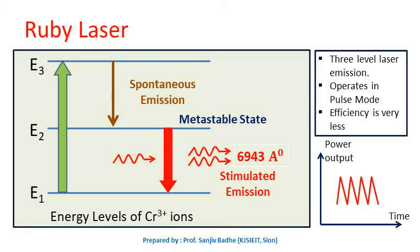The efficiency of the ruby laser is very low. Only a part of the light energy is utilized for exciting the chromium ions from E1 to E3; the rest remains unused and results in unnecessary heat, so frequent cooling is required. The power output is not continuous — it is in the form of pulses of microsecond duration.